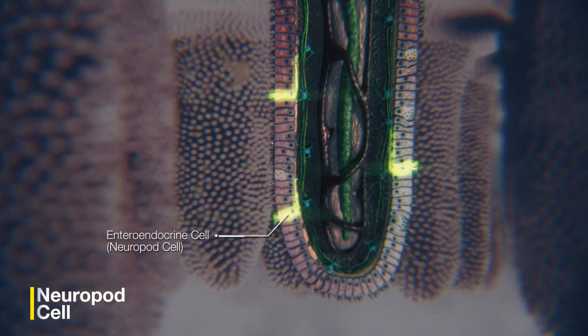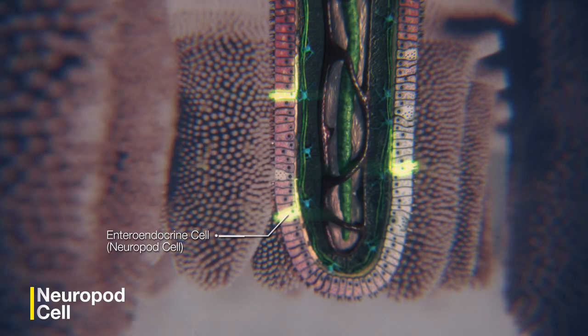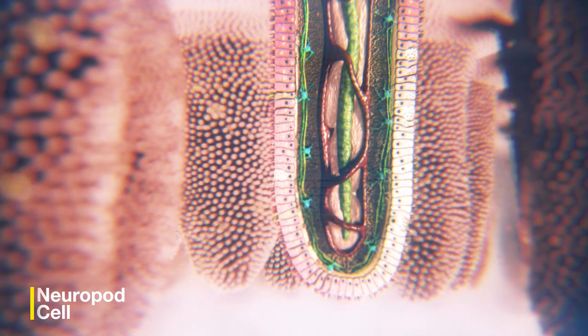One of them, the enteroendocrine cell, is unlike the others. It is our gut sensor.